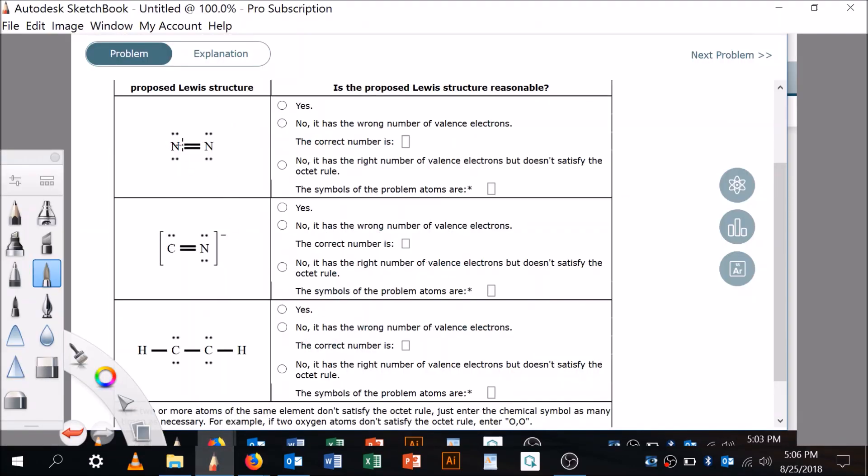So let's look at some structures. The proposed Lewis structure for N2 is as follows. Nitrogen comes in, it's in group 5, and so I need 10 valence electrons. 2, 4, 6, 8, 10, 12. Wait, wait, wait. 2, 4, 6, 8, 10, 12.